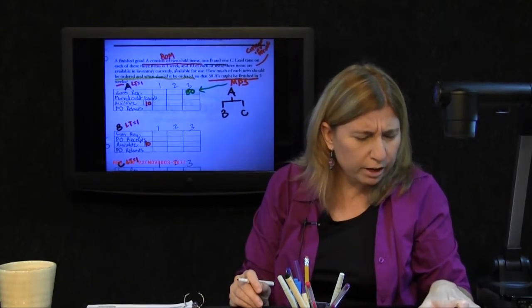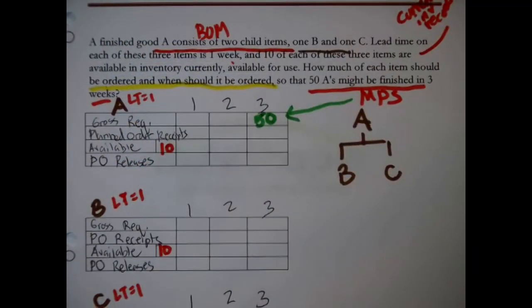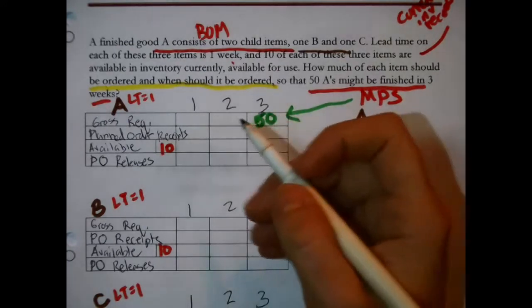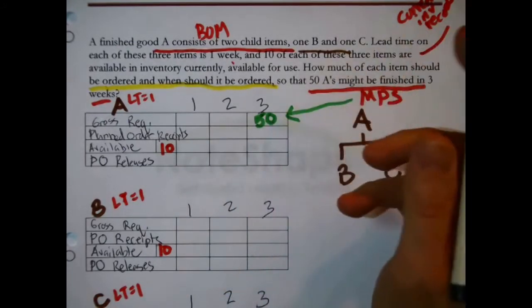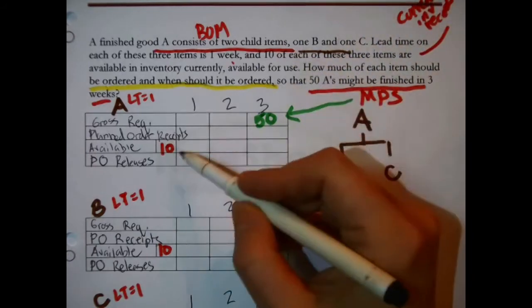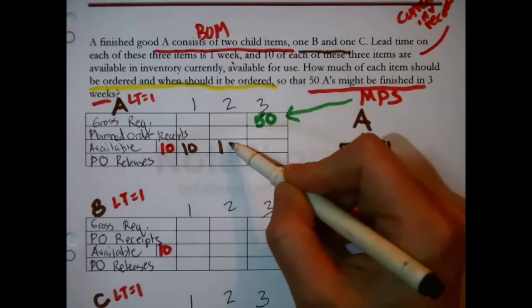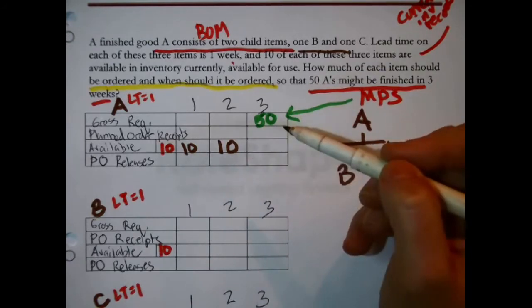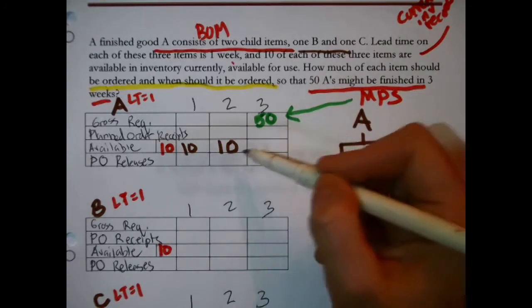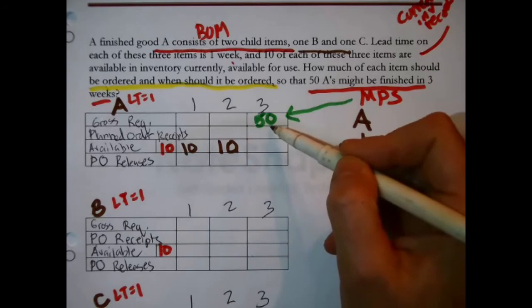Fill out the record for A. Let's see what's going on now. There's ten in stock and there needs to be these fifty finished because they're going to be shipped out in the third week. That means for the first two weeks we just carry those ten in stock.